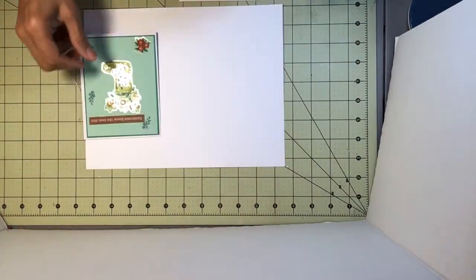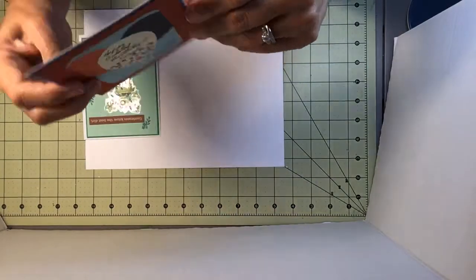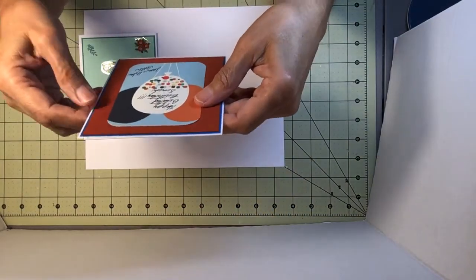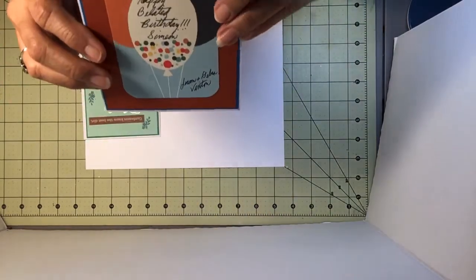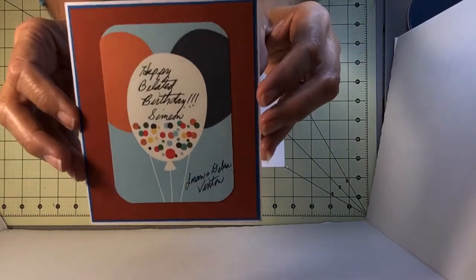Okay. The next one goes to a teenager. It's always hard to do for a teenager, and I'm late. It says happy belated birthday. And his name is Simeon, you'll see his name there.